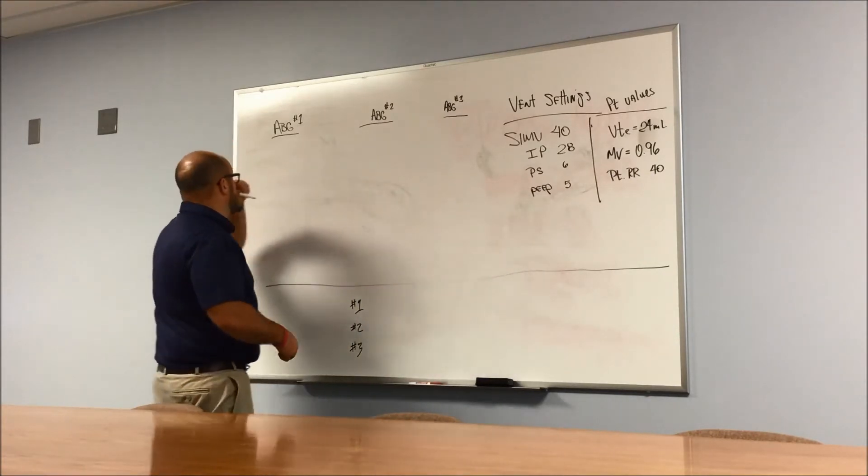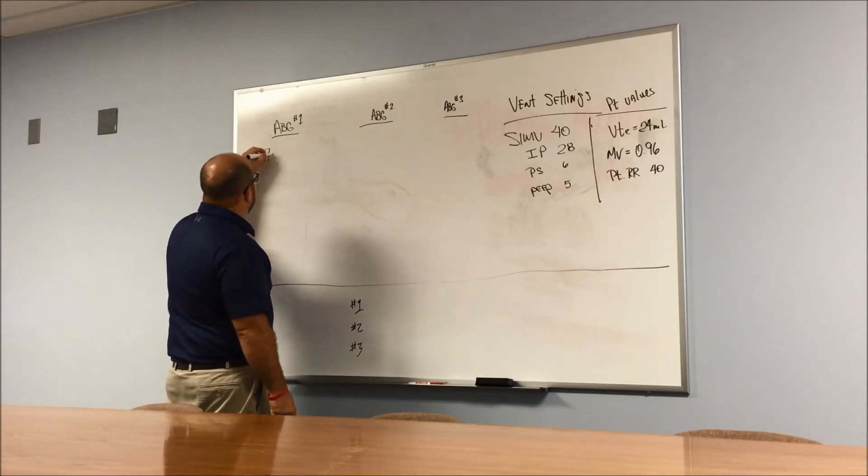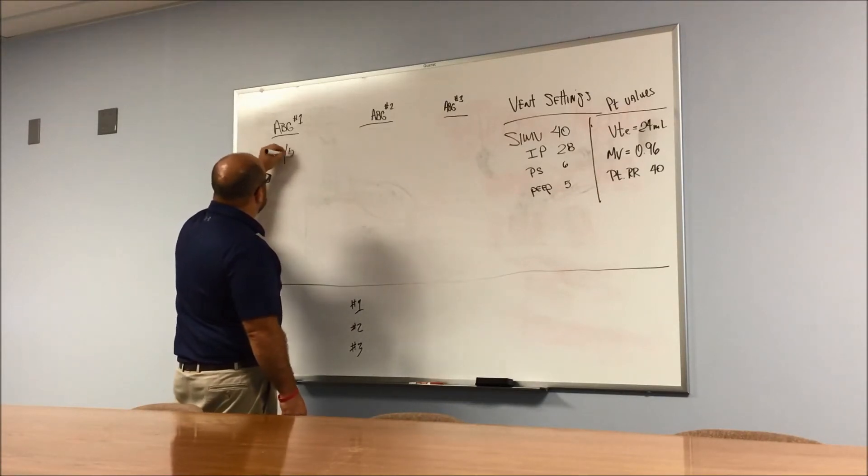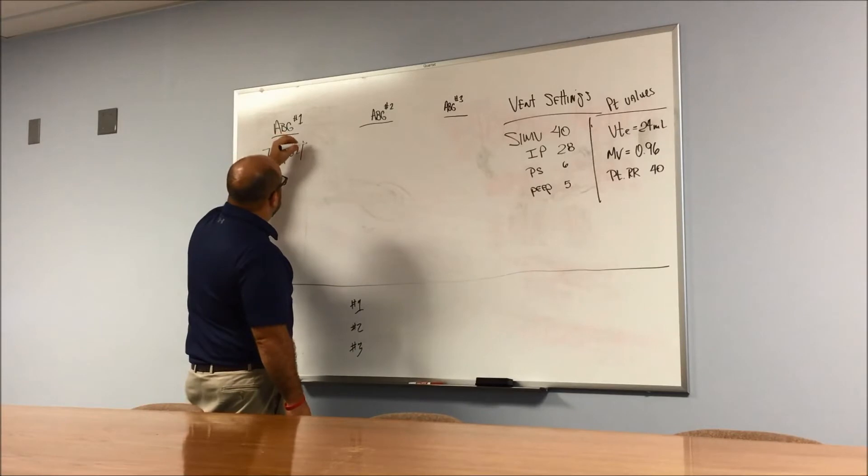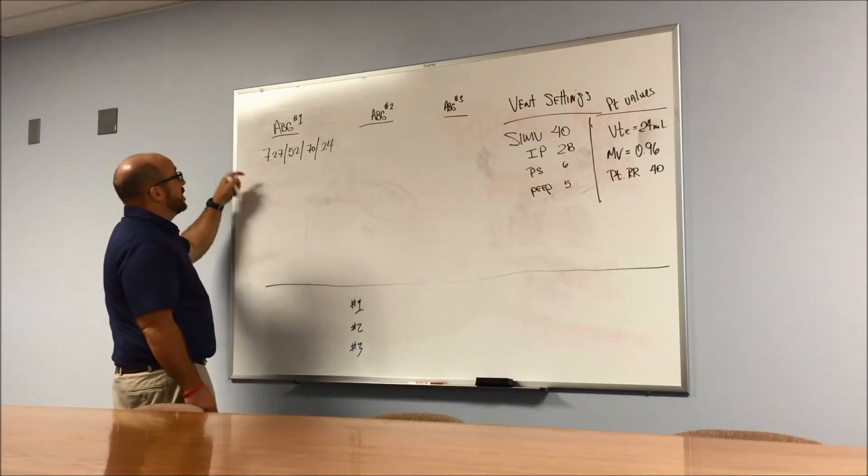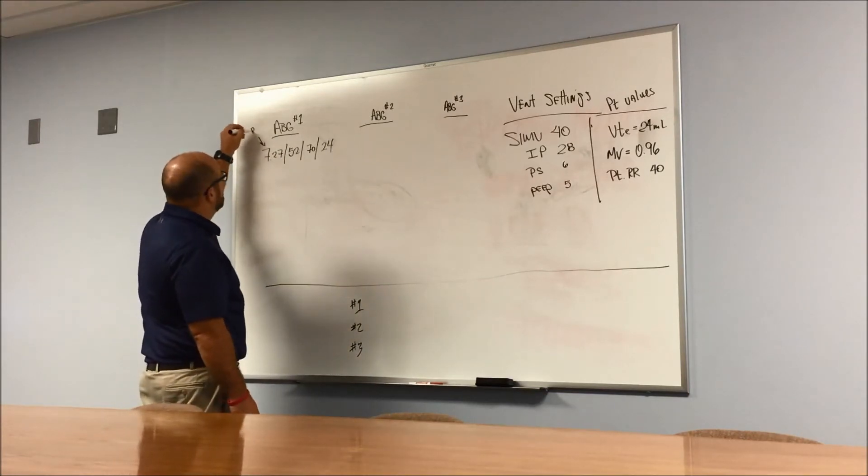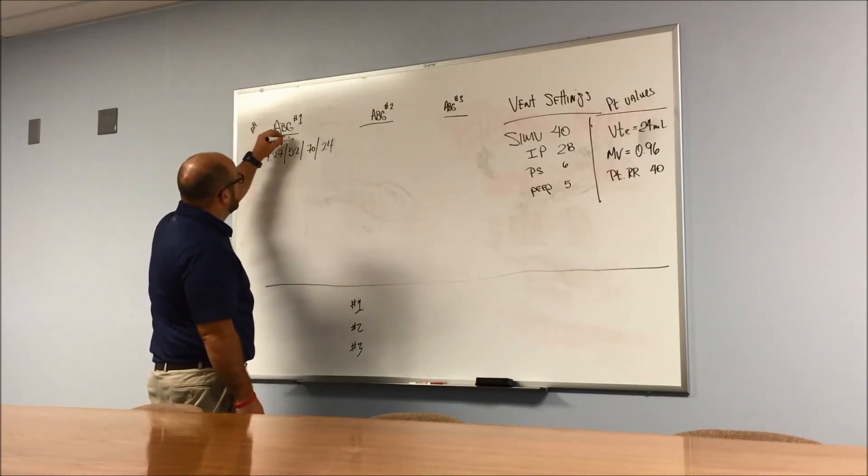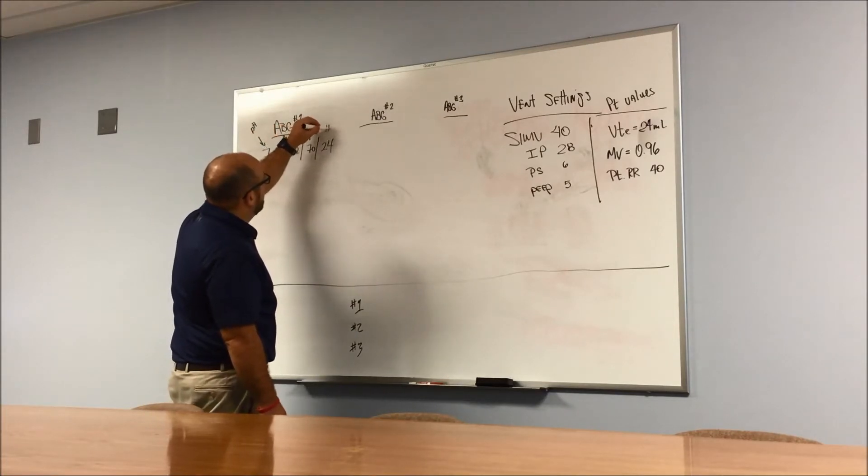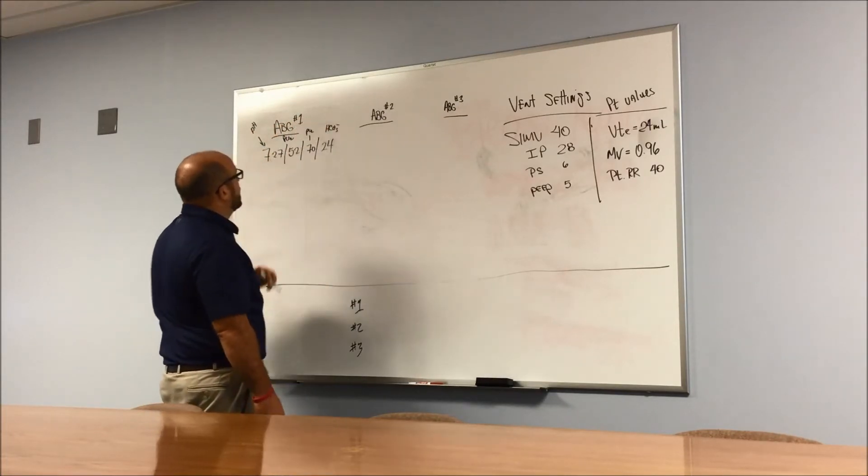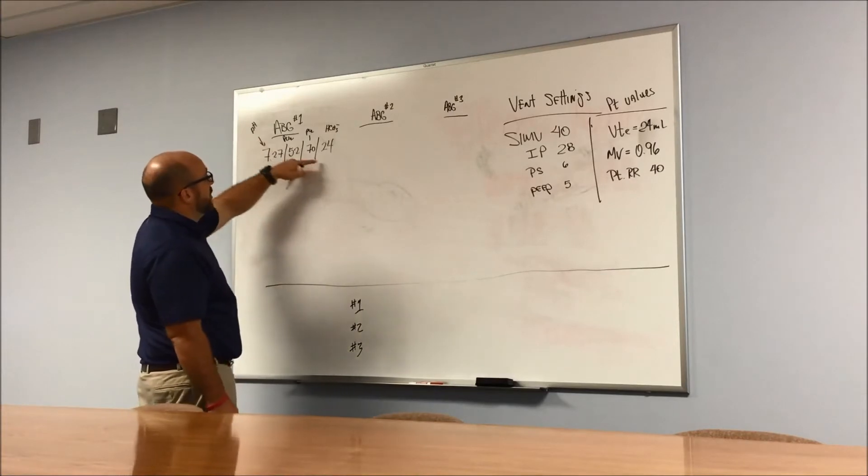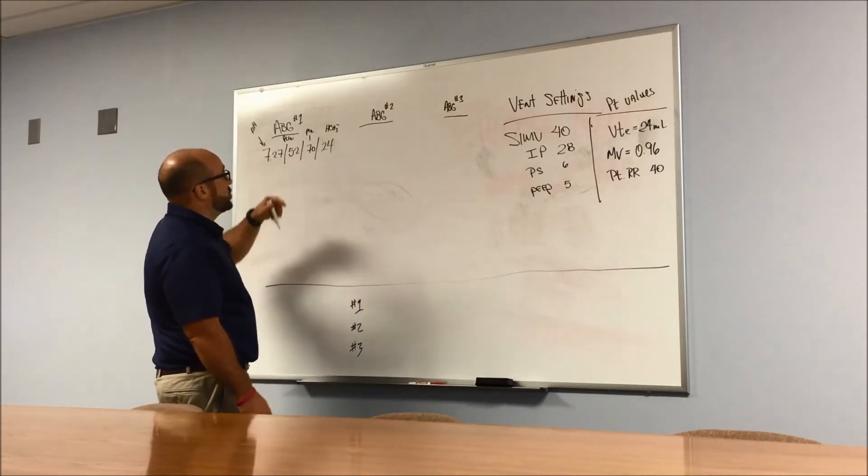Let's go over a blood gas first. We have a term neonate over here on a ventilator. I'm going to give you the first blood gas: 7.27, 52, let's say 70 and 24. So if we remember this, this one's going to be pH, pCO2, pO2, and bicarbonate.